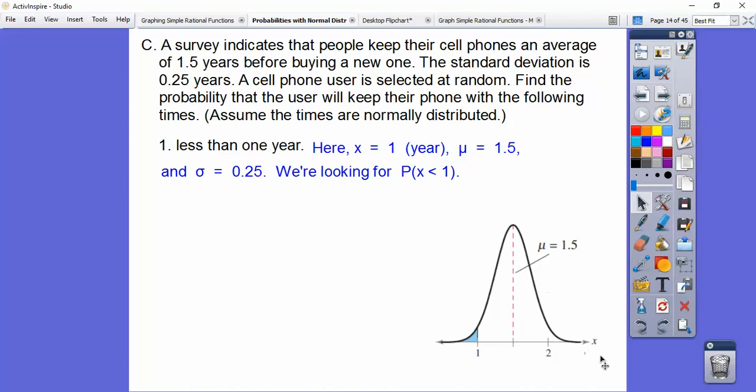So let's go ahead and get our Z-score value right there. Always draw a normal curve. If you don't, then I'll ding you some points on your work right there. Right here in the middle is your average. So our average here is 1.5 years. And then we want to know who keeps their phone less than a year. All right, so Z equals X minus the mean divided by the standard deviation. Our X is the 1, so minus the 1.5 divided by the 0.25, and we get negative 2.